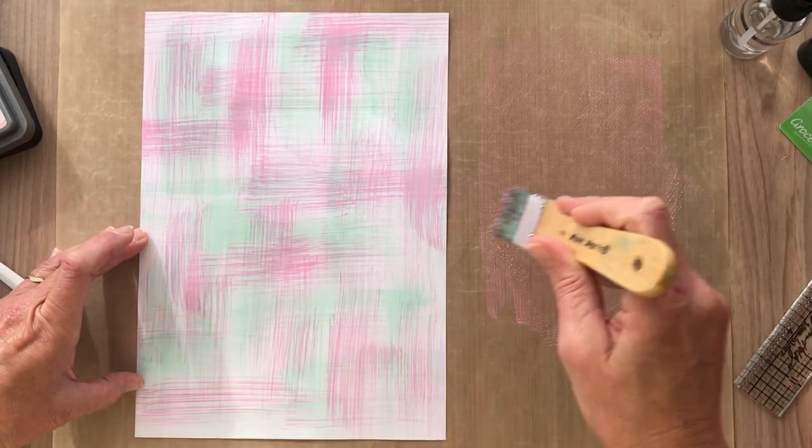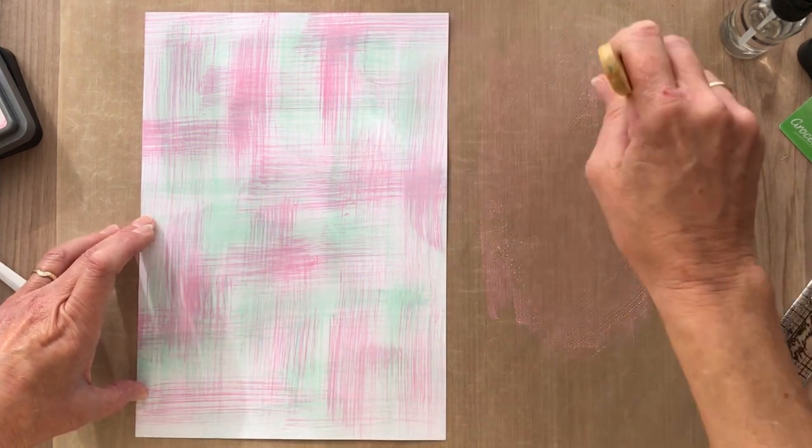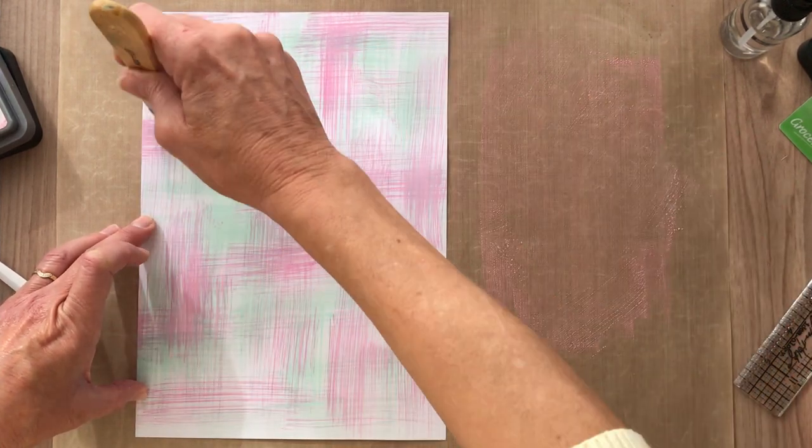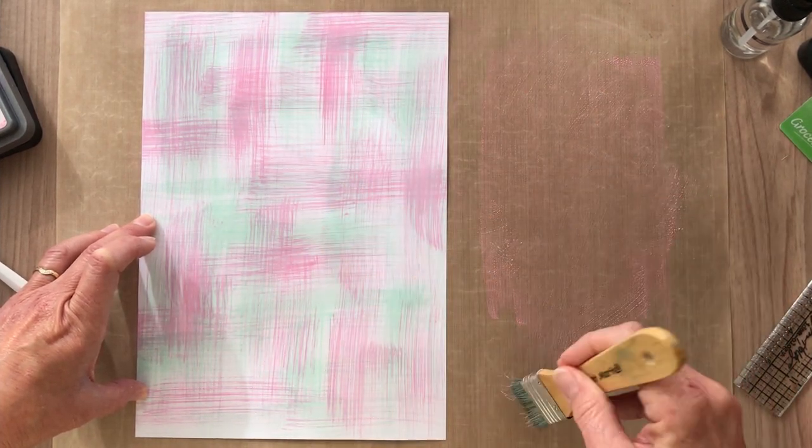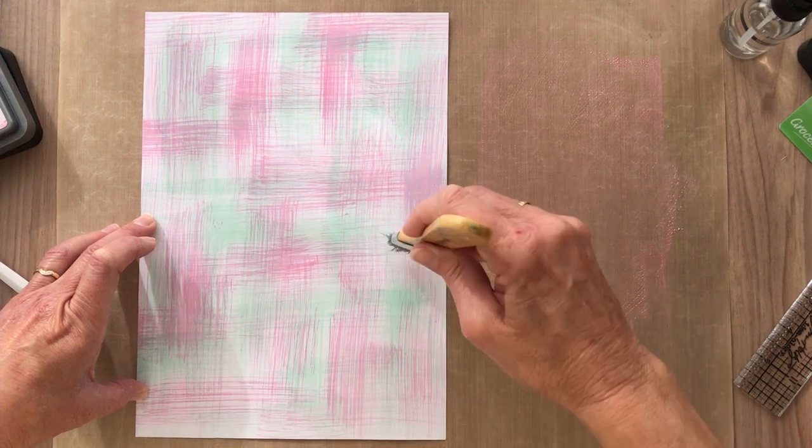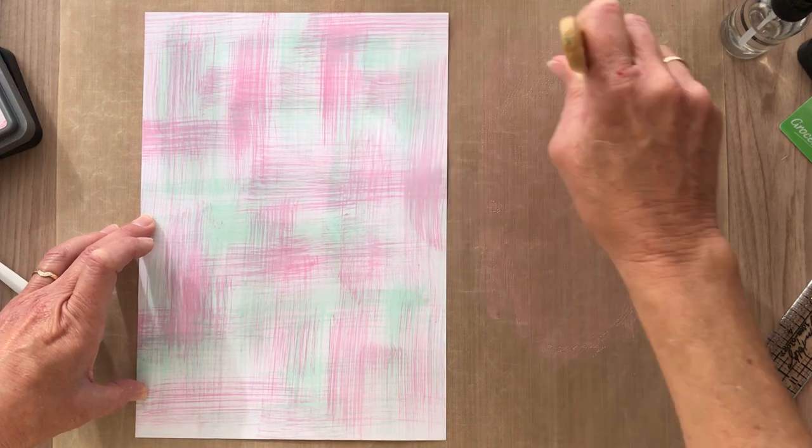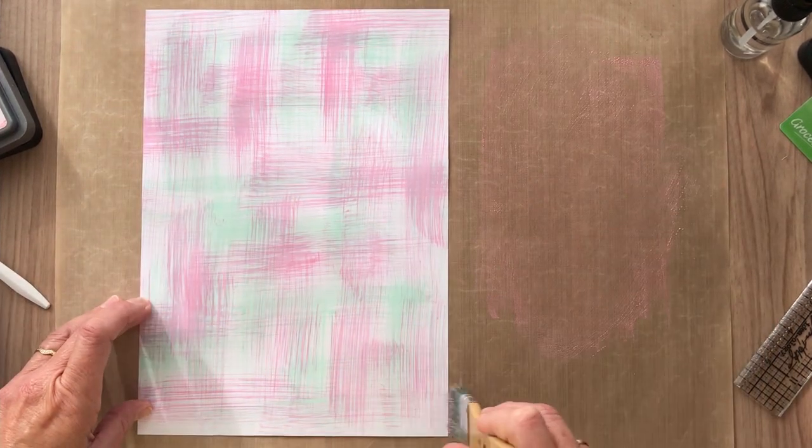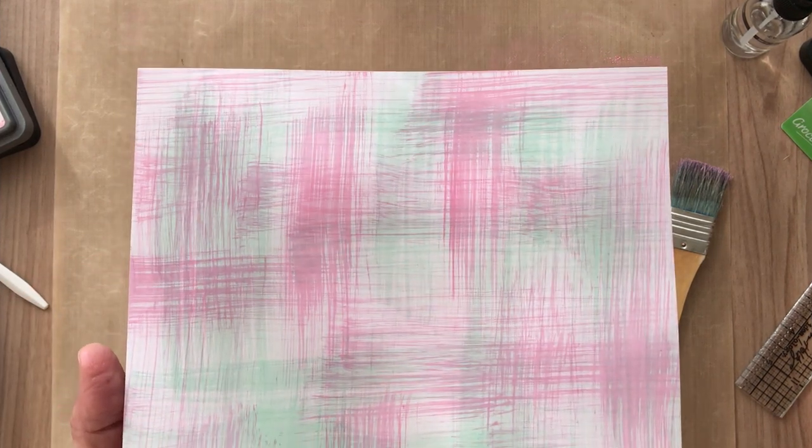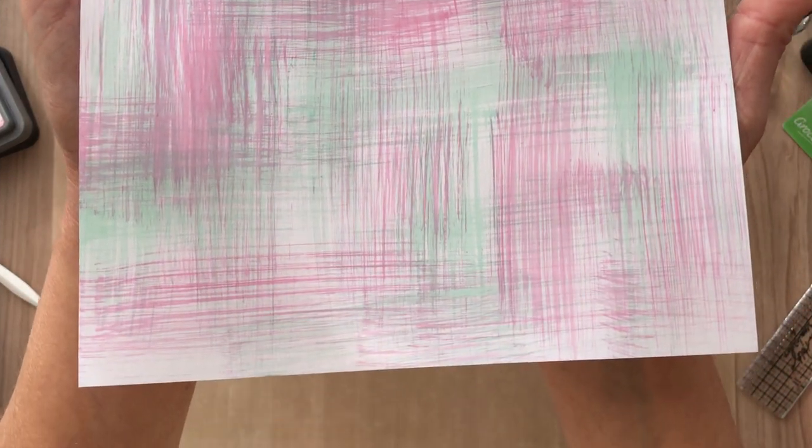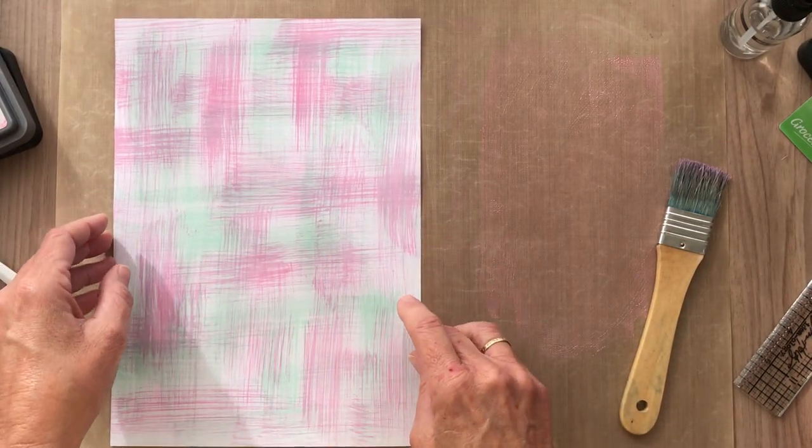You just keep doing that until you're happy with the effect. I think that's good. I kind of like to make sure I've got things crossing over a little bit. It's a beautiful pink this Kitsch Flamingo. That's what I have now, so I'm going to dry that off and come back and show you the next step.